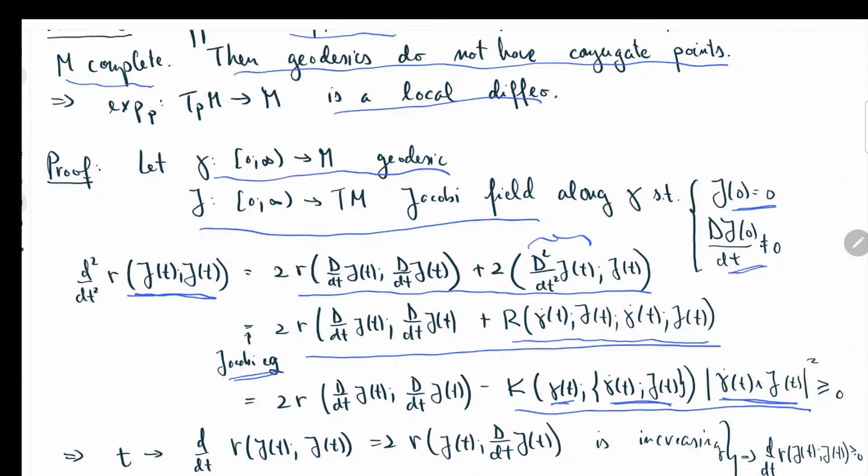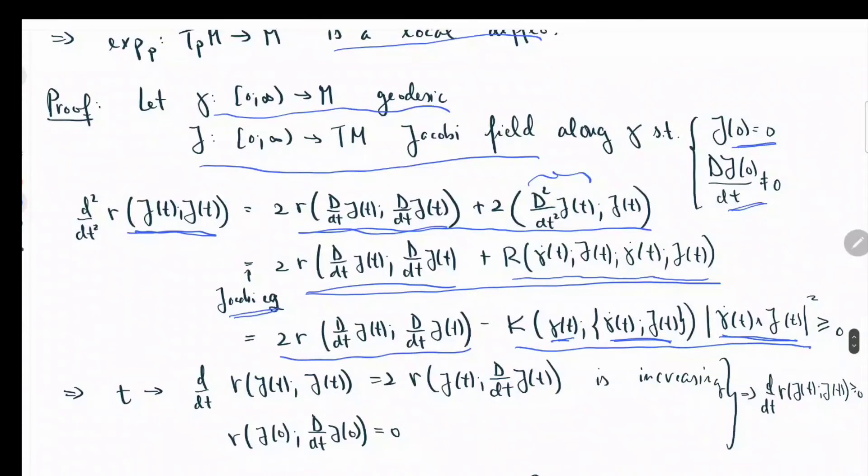Times the length of gamma dot t wedge j(t). And we're still carrying this term with us. Now let's see if this has a sign. This is just the length of a vector, so this is always positive. The sectional curvature is always non-positive, so with this negative sign here, it's always non-negative.